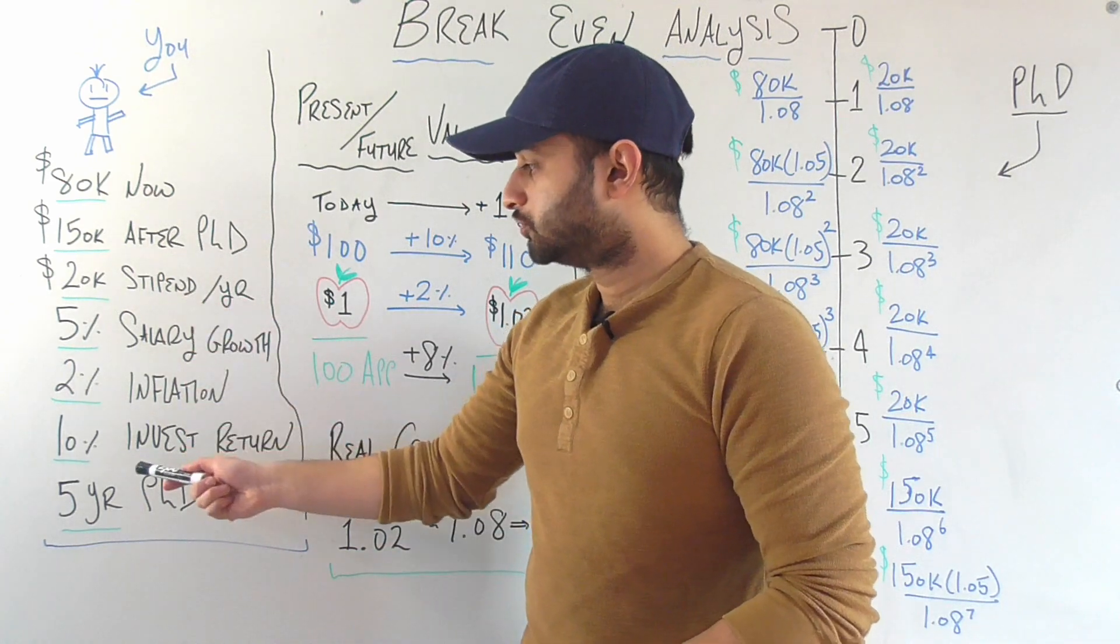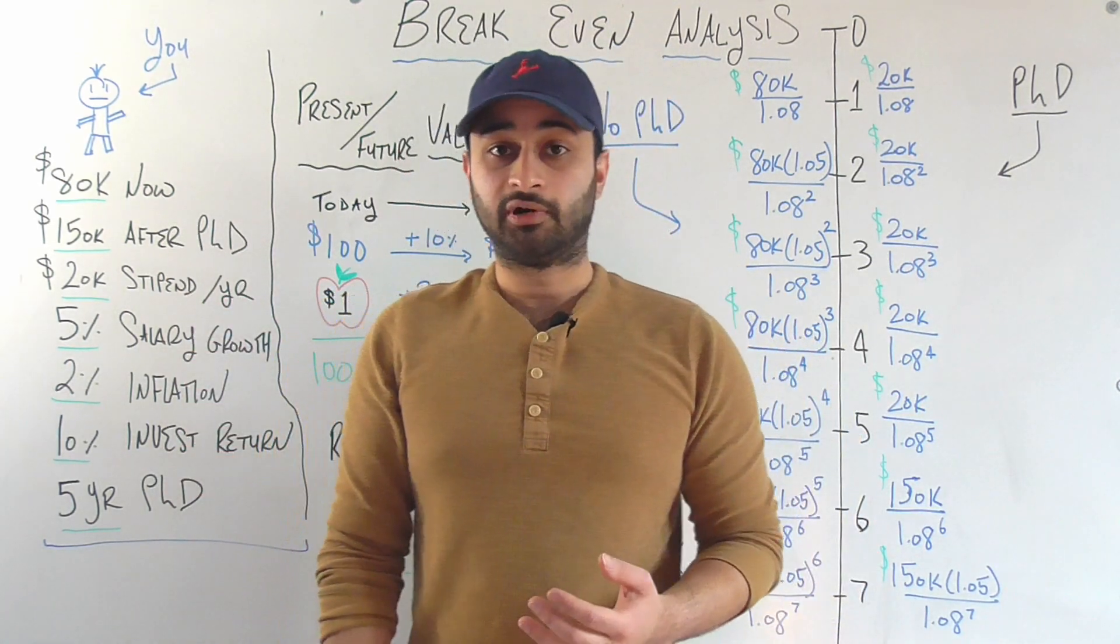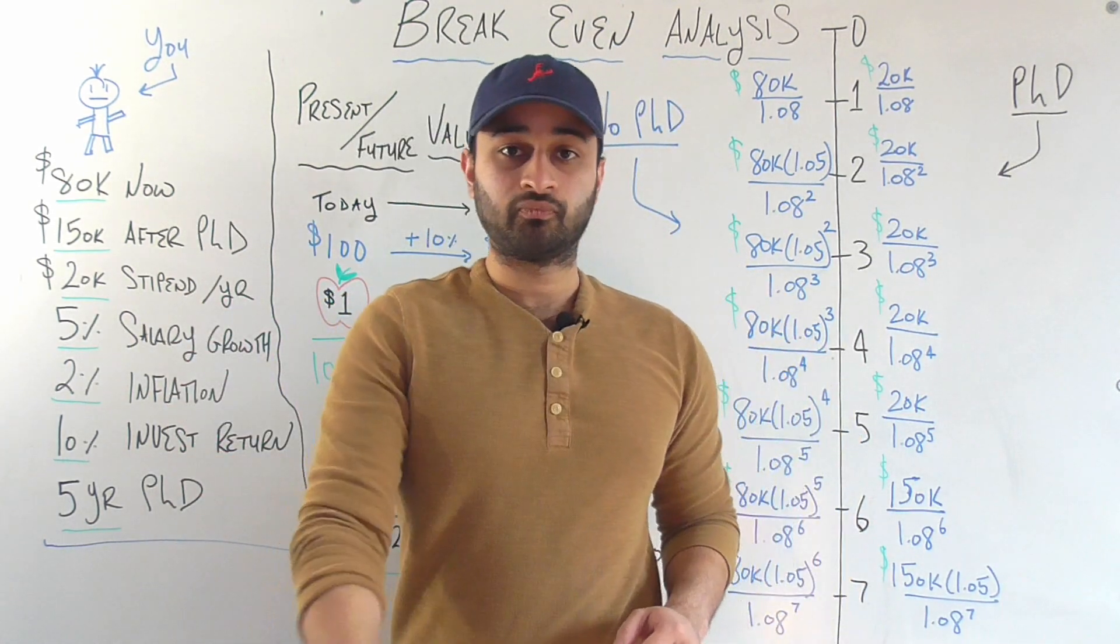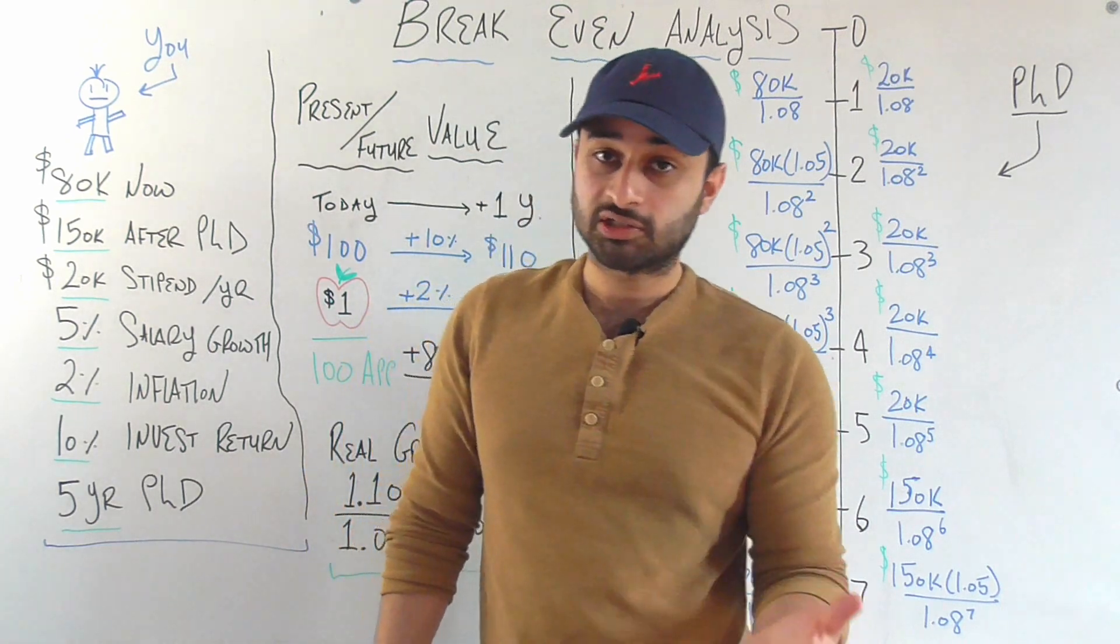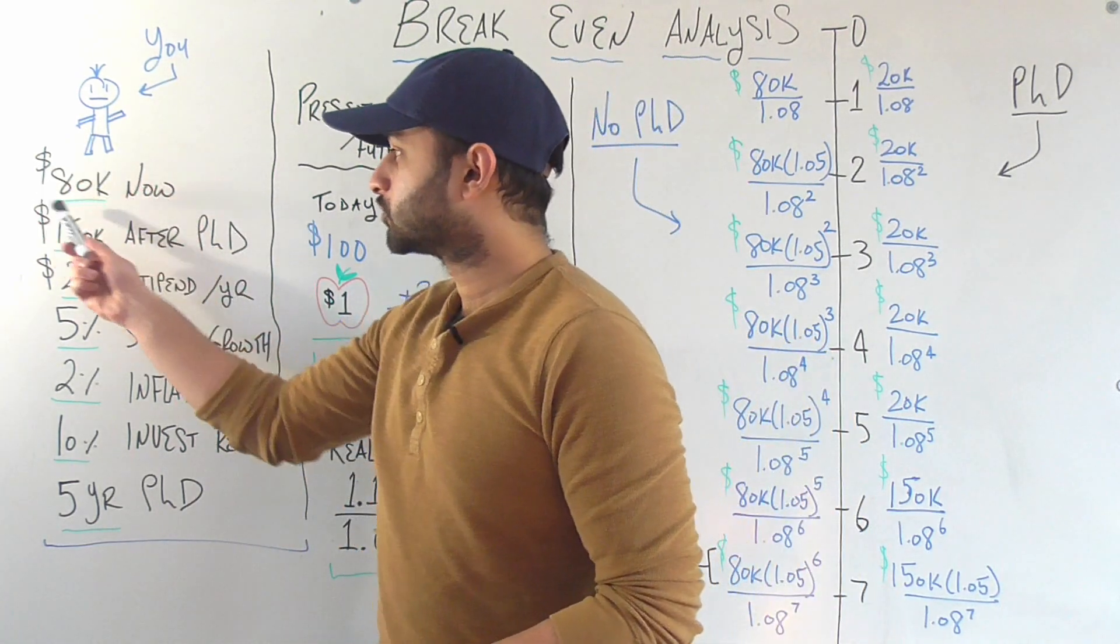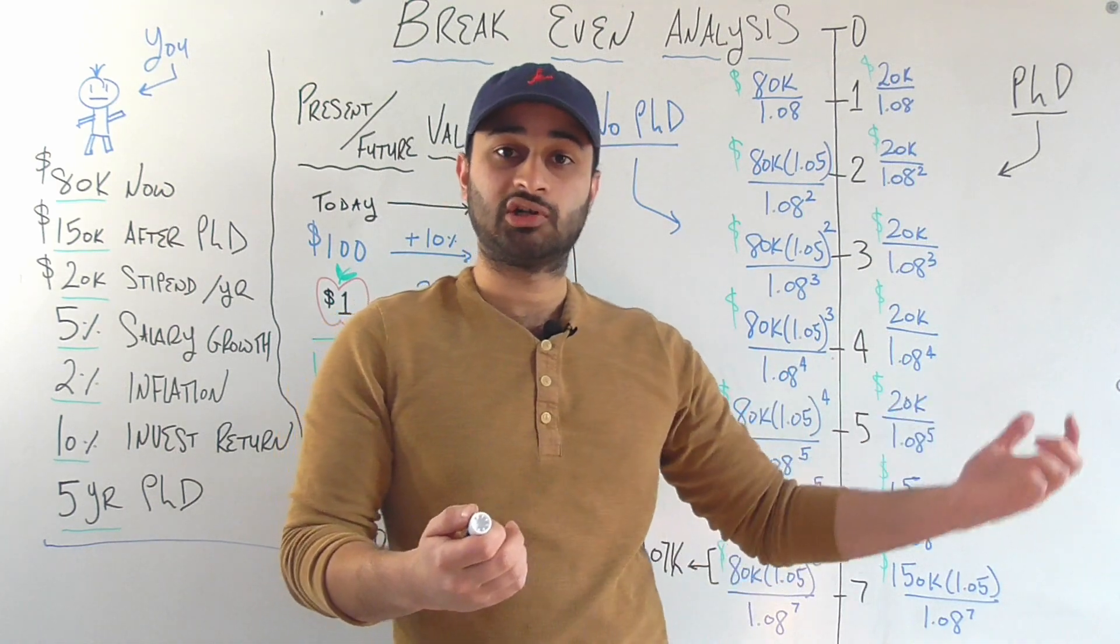And we have a couple other factors too. Let's say that the growth in your salary is going to be 5% per year. What that means is that if you choose not to get a PhD, this $80,000 you're making is going to increase by 5% per year, so these are raises that you're getting annually.